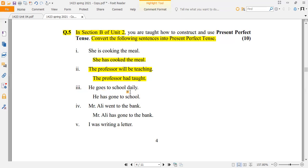He goes to school daily. So if you use a singular form, then you have to add has. He has gone to school. The third form is gone. Go, went is second form, the third form is gone. So he has gone to school. Next, Mr. Ali went to bank.